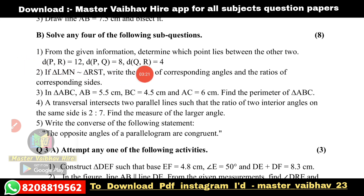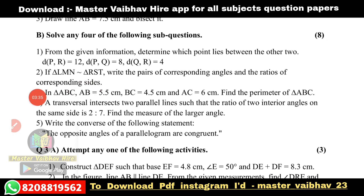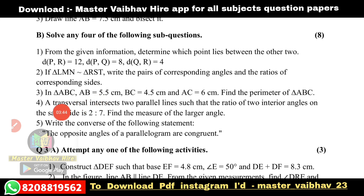Next sub-question: DP comma R is equal to 12, DP comma Q is equal to 8, DQ comma R is equal to 4. If triangle LMN is congruent to triangle RST, write the pairs of corresponding angles and the ratios of corresponding sides. In triangle ABC, AB is equal to 5.5 cm, BC is equal to 4.5 cm, and AC is equal to 6 cm — find the perimeter of triangle ABC.